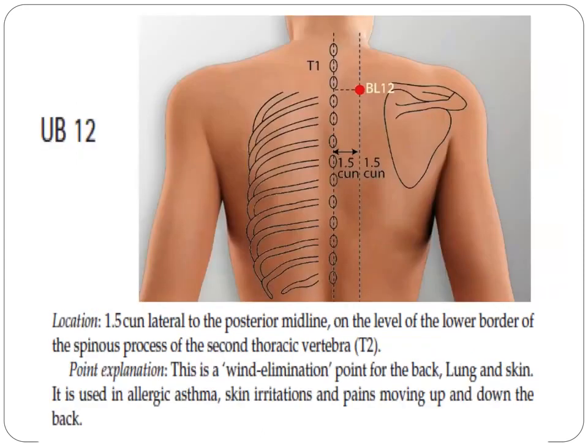Next, we have UV12, which is located at 1.5 cun lateral to the posterior midline, on the level of the lower border of the spinous process of the second thoracic vertebra, T2. Point explanation: this is a wind elimination point for the neck, lung, and skin. It is used in allergic asthma, skin irritations, and pains moving up and down the back.